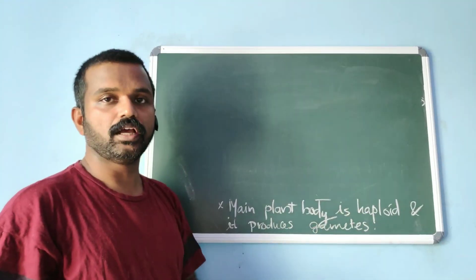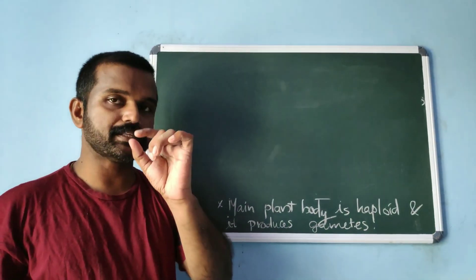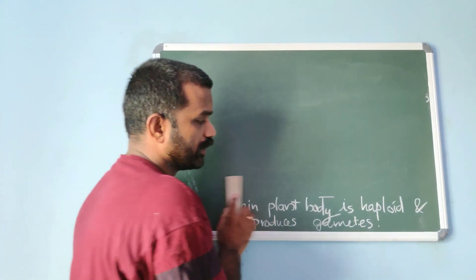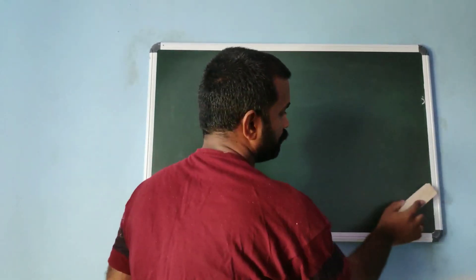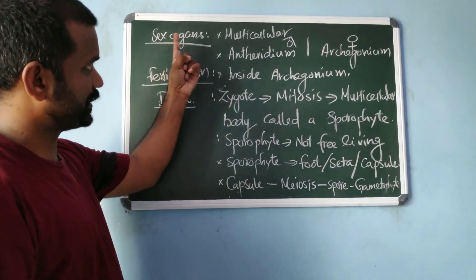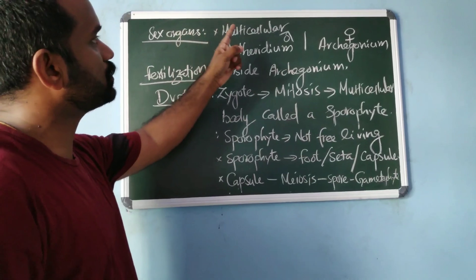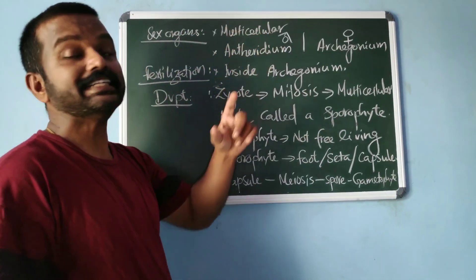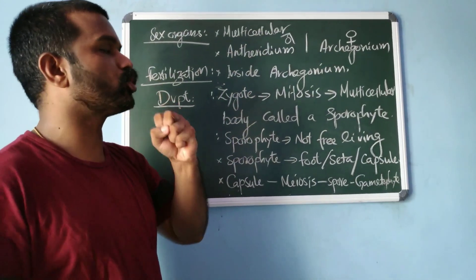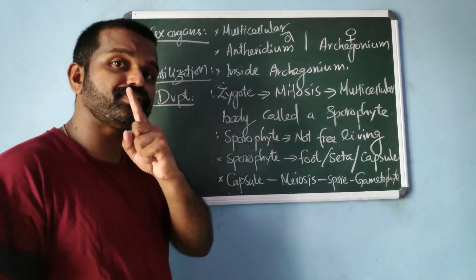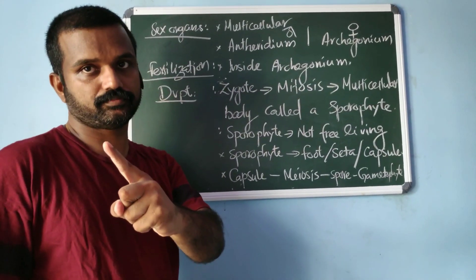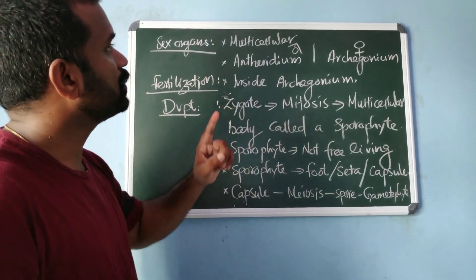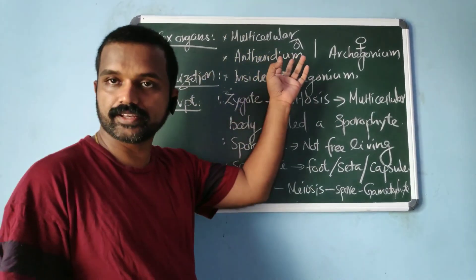The main plant body is haploid and it is known as the gametophyte. Next, about sex organs in bryophytes: sex organs in bryophytes are multicellular jacketed sex organs, which appear for the first time in bryophytes.